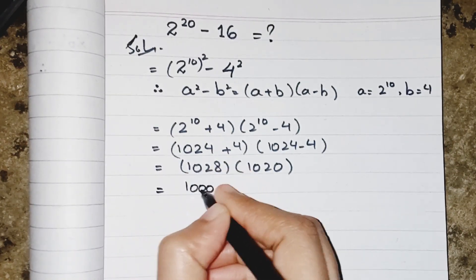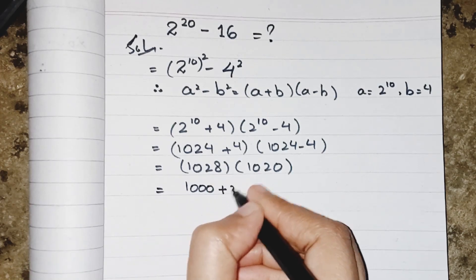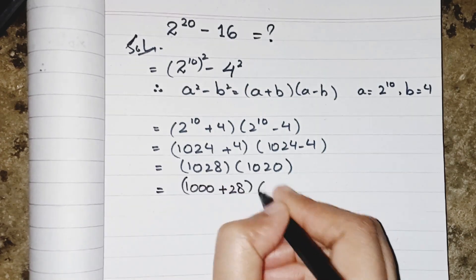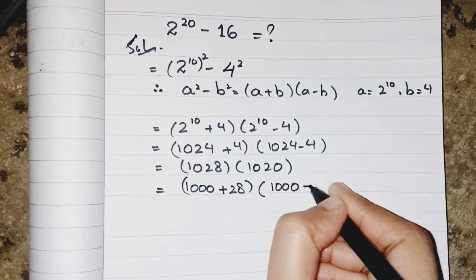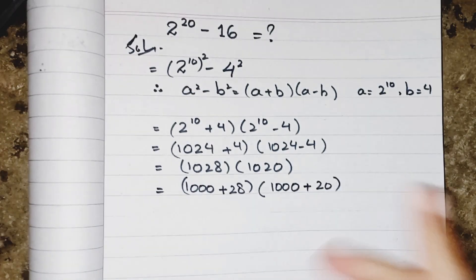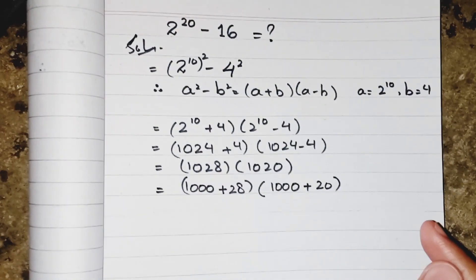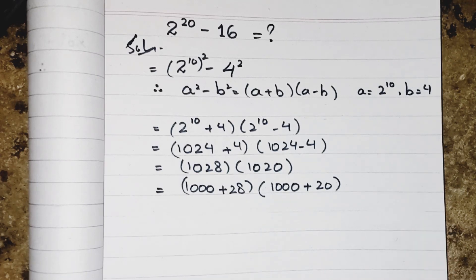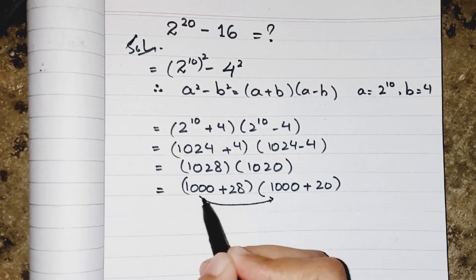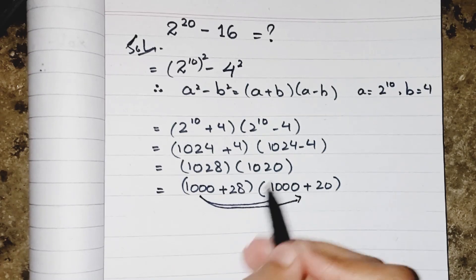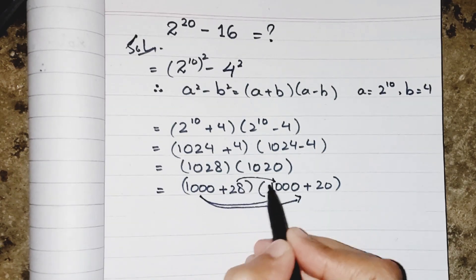1028 will be distributed into 1000 plus 28, and similarly 1020 becomes 1000 plus 20. Now the multiplication of both will be easy: this 1000 multiplied by 1000 as well as by 20, similarly this 28 will be multiplied by 1000, and 28 multiplied by 20.